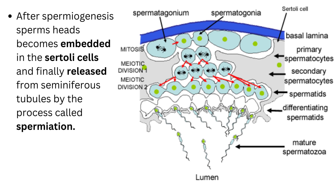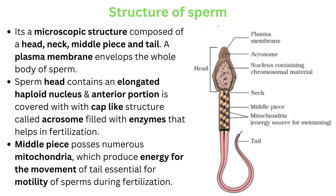The structure of sperm — please follow the diagram accordingly. It is a microscopic structure composed of a head, neck, middle piece, and a tail. A plasma membrane envelops the whole body of the sperm. The sperm head contains an elongated haploid nucleus, and the anterior portion is covered with a cap-like structure called the acrosome, filled with enzymes that help in fertilization. The middle piece possesses numerous mitochondria which produce energy for the movement of the tail, essential for motility of sperms during fertilization.